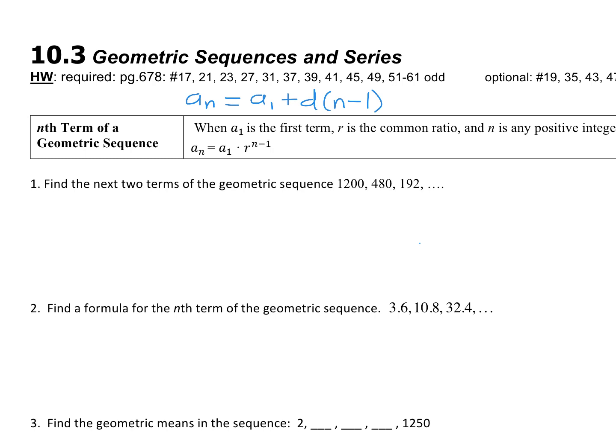If you multiply by r three times — times r, times r, times r — that doesn't mean it's multiplied by 3r, but it means it gets multiplied by r to the third. That's why the n minus 1 is now in the exponent. Three changes: the plus becomes times, the d becomes the common ratio r, and n minus 1 jumps up to the exponent, because when you multiply by r more than once, it becomes r to the whatever power.